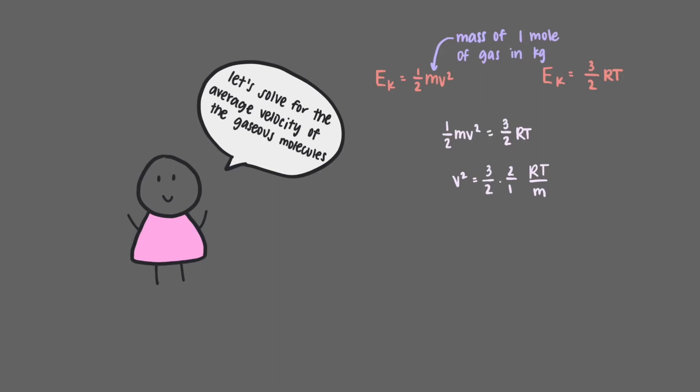We'll multiply by two and divide by the mass on both sides. Then we'll take the square root of both sides, leaving us with v rms is equal to the square root of 3 rt over mass. This quantity is called the root mean square speed of the gas molecules.